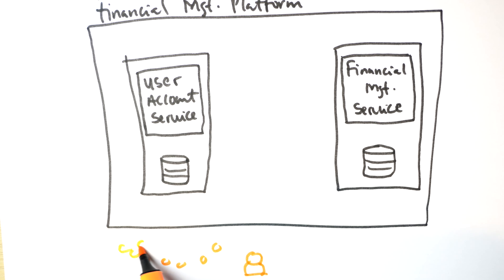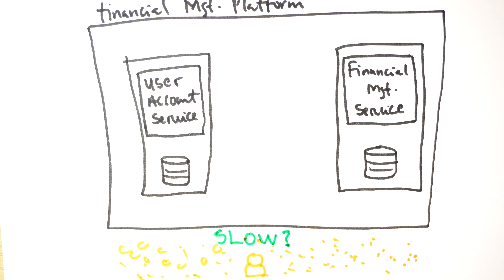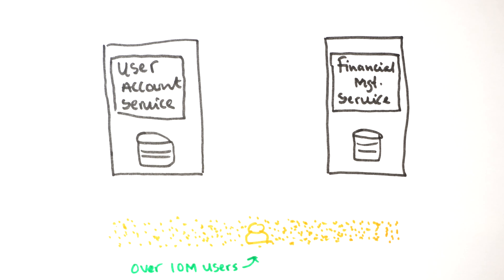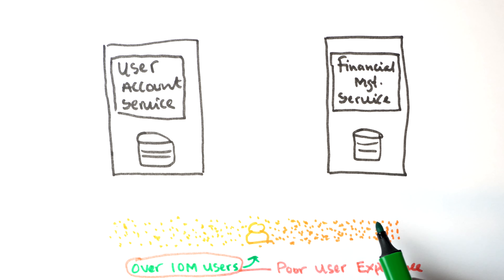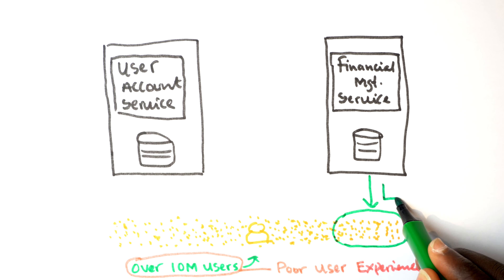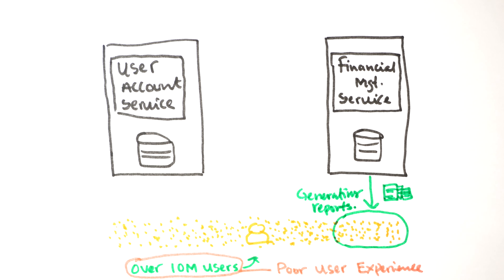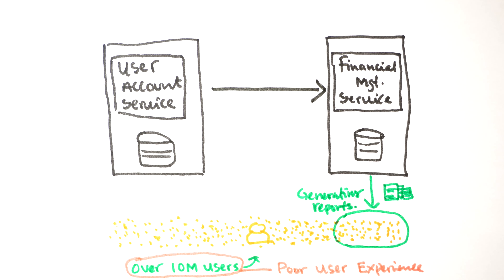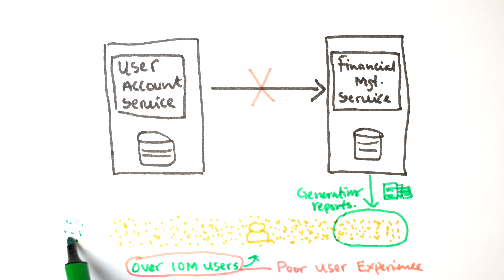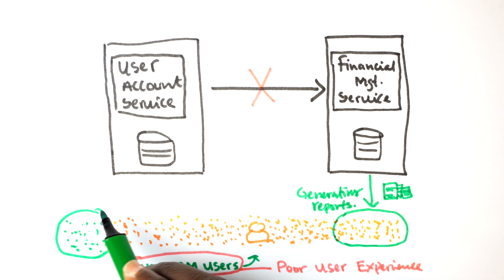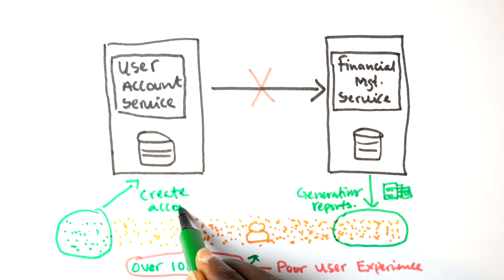Everything is working fine until you reach tens of thousands, hundreds of thousands, or millions of users. Things start becoming slow — even with multiple instances of these services, the user experience drops. After investigating, you find the real cause is that a percentage of your millions of users are generating reports. Because report generation consumes a lot of resources, it slows down the financial management service.